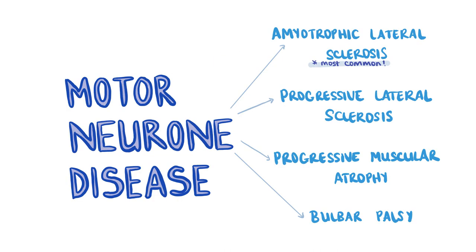Another differential to consider is motor neuron disease. Motor neuron disease is a rare neurodegenerative condition of unknown etiology. It usually occurs in patients over 40 years old and is associated with a poor prognosis. 50% of patients die within 3 years of diagnosis.